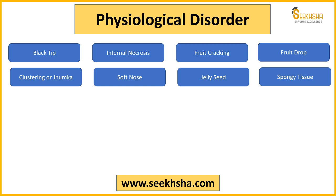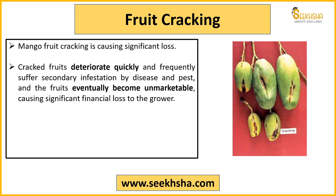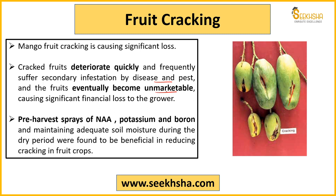Next jo humara physiological disorder aajata hai woh hai fruit cracking. Mango fruit cracking bhi eek bhot major problem hai. Is tariqe se cracks develop ho jaate hain fruit ke andar, aur jo cracked fruit hota hai woh bhot jaldi kharab hoga kyunki uske andar diseases aur pest attack ka jo risk hai woh bhi bada jata hai, aur yeh attractive bhi nahi dikhta to market mein bheechna isko bhoat zaadha mushkil hota hai. Iske andar aap harvest karne se pehle potassium ya boron ka spray kar saktay ho. Soil moisture ko maintain karo field ke andar — woh bhi eek major reason ban jata hai fruit cracking ka — specially jab aapka dry period chal raha ho us time par bhoat important hai ki aap soil moisture ko maintain karen.